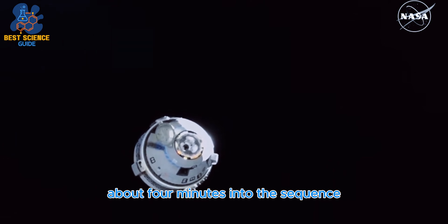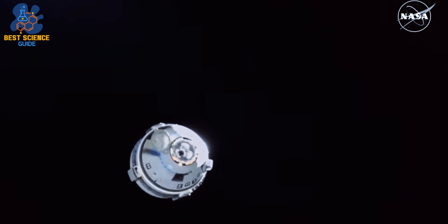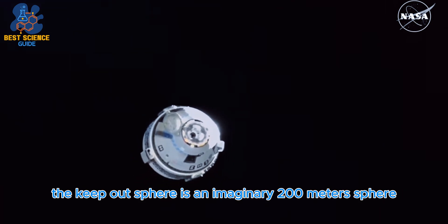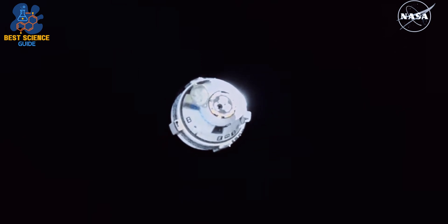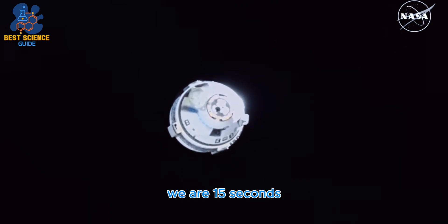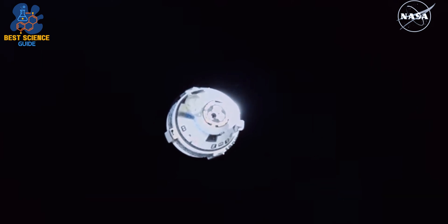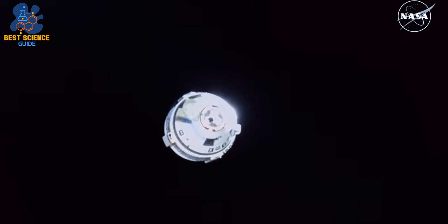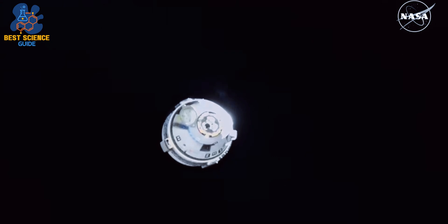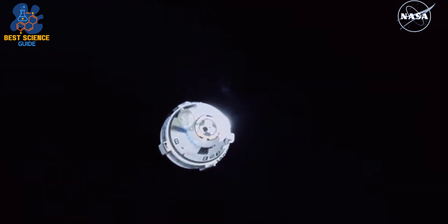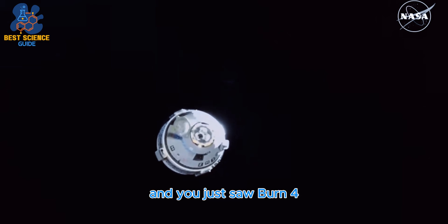About four minutes into the sequence, Starliner will cross what is known as the keep-out sphere. The keep-out sphere is an imaginary 200 meter sphere centered on the space station. We are 15 seconds away from the fourth burn in the series of 12. You just saw burn four.